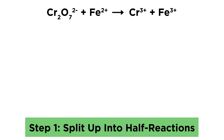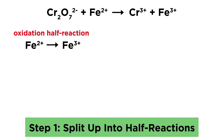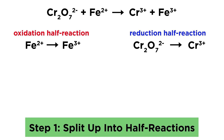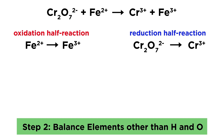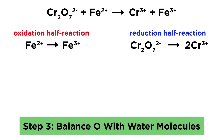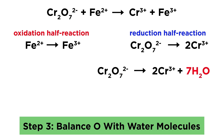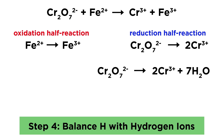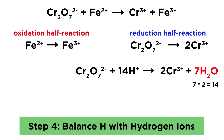The first step is to split this up into half-reactions. For the oxidation half-reaction, iron 2+ becomes iron 3+. This is the oxidation half-reaction because the ion has lost another electron. For the reduction half-reaction, dichromate becomes chromium 3+. We can see by looking at the oxidation numbers for chromium that it has been reduced. Now we must balance each half-reaction, starting with elements other than hydrogen or oxygen. We can see that for the reduction, we need to put a 2 here to get two chromium atoms on each side. Next, we balance oxygen by adding water molecules. We have 7 oxygen atoms on the left, so we need to add 7 water molecules to the right. Now we can balance hydrogen atoms by adding hydrogen ions. Since there are 14 hydrogen atoms on the right from the 7 water molecules, we will need 14 hydrogen ions on the left.